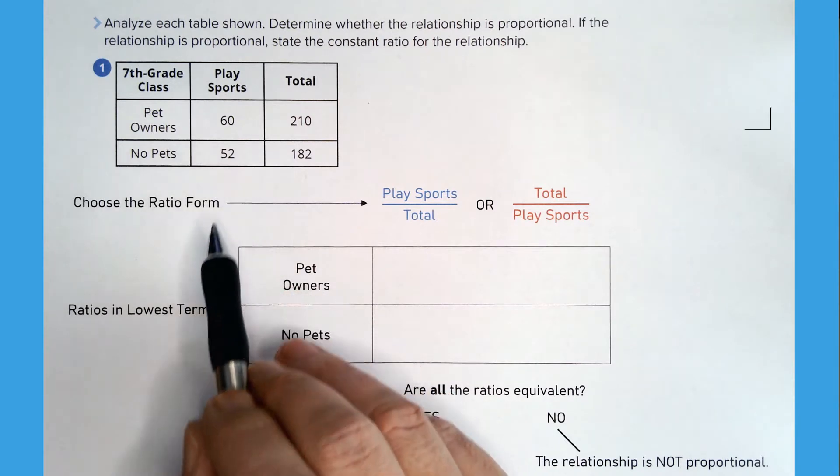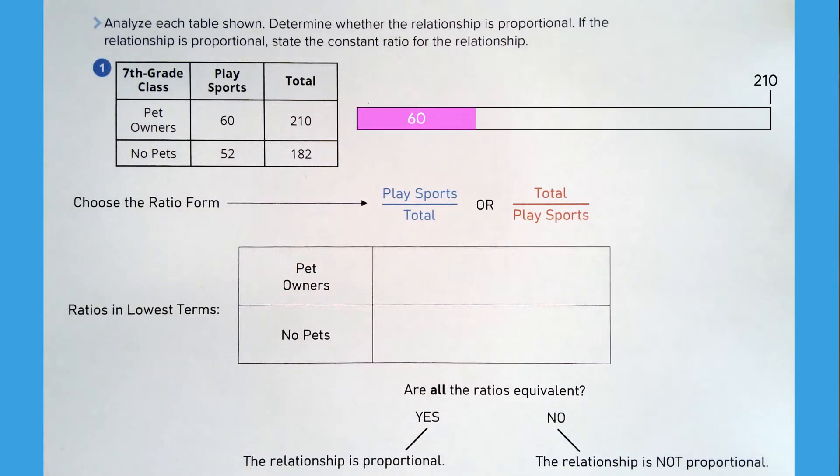What we want to know is whether the number of pet owners who play sports is proportional to the number of non-pet owners who play sports.